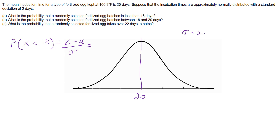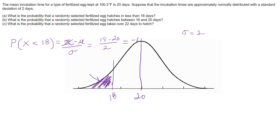We compute z equals x minus the population mean over the standard deviation. So z = (18 − 20) / 2. Somewhere to the left of the mean is 18, and we want the area to the left of that point. Subtracting gives negative 2 over 2, which equals negative 1. That's our z-value.